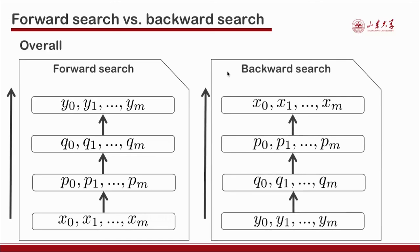The backward framework takes the opposite approach. We first deal with every output value yi, splitting it into input values. Since input values cannot always be obtained directly, intermediate values qi are used to split yi, then pi to split qi, and finally input values xi to split pi, producing an implementation from outputs to inputs. Because XOR is invertible, this is then converted into a circuit from inputs to outputs with the same number of XOR operations.